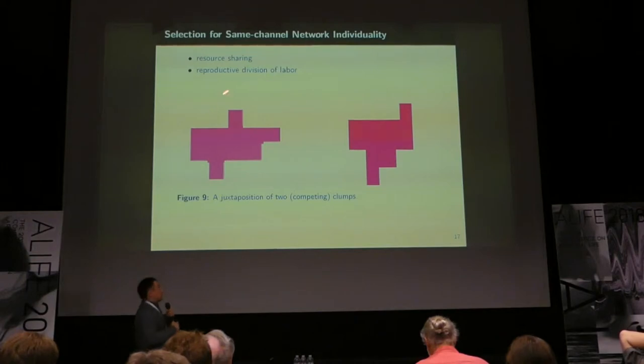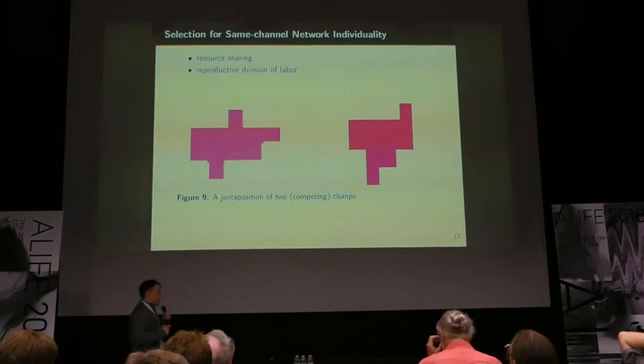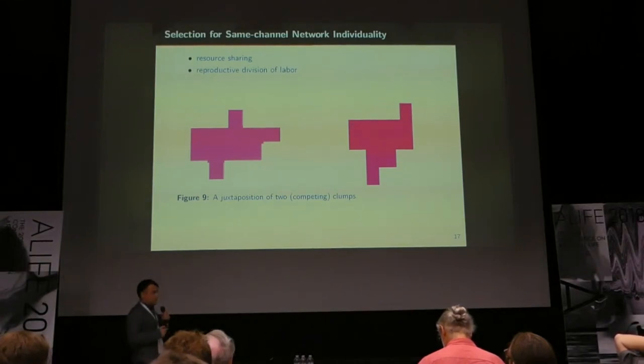However, if the cells in this clump are coordinating and sharing resource so that the cells on the outside of the clump can reproduce, and engaging in reproductive division of labor so that they're not constantly replacing each other, you would expect these cells to basically be able to marshal their resources much more effectively, and eventually clumps like this will stomp out clumps like that. This is why we're expecting to see transitions of individuality at the level of the cell signaling network, because of competition between clumps here.